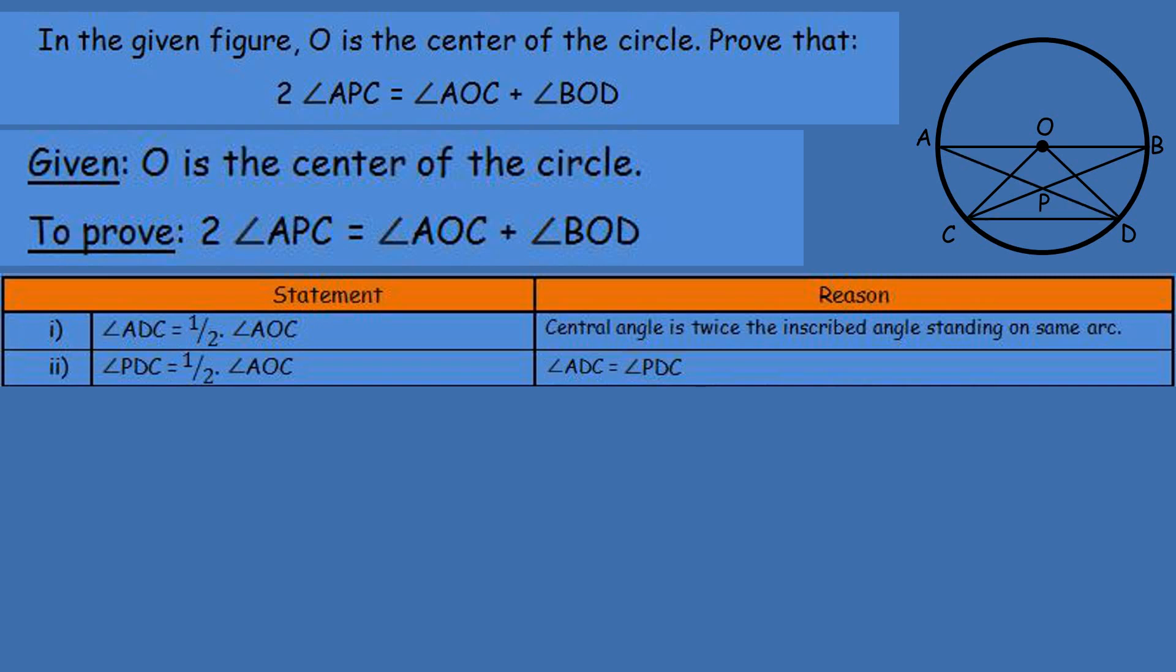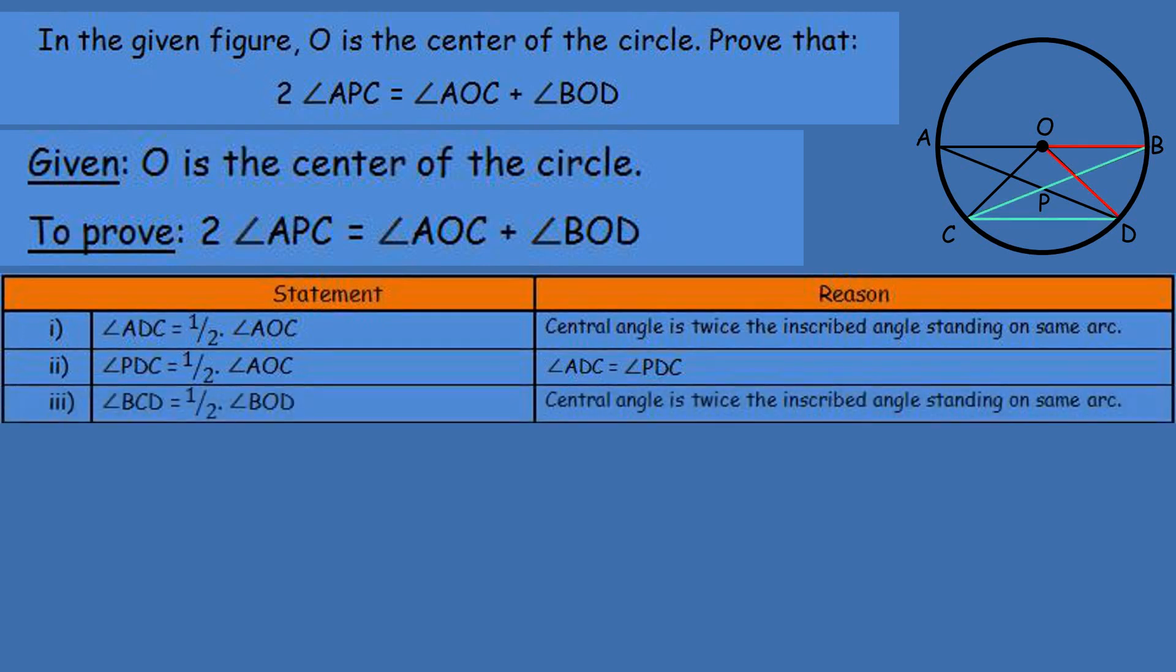Now, central angle and inscribed angle with the same relation used. I mean, angle BCD is equal to half times of angle BOD. How? Now, here I mean, angle BCD is the inscribed angle standing on arc BD, angle BOD is the central angle standing on arc BD, right?